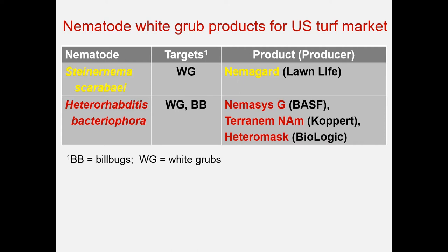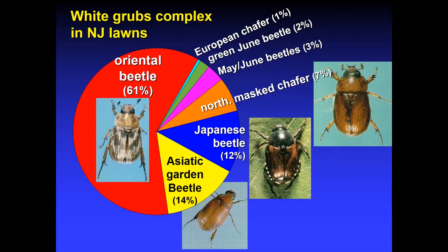The species Heterorhabditis bacteriophora has been available in the turf market for a long time, used against white grubs or bill bugs. Among the larger companies that produce these nematodes in vitro in fermenters is BASF, with the product Nemesis G. Then there's Koppert with the product TerraNem for North America, and Biologic is another company that produces it. More recently, another species has become available: Steinernema scarabei. It's a species found in New Jersey about 20 years ago, particularly effective but rather specific to white grubs. For the last four years, there has been a product based on it produced in Canada and sold as Nemagard by a company called Lawn Life, and this year is the first time they have also been selling it in the U.S.